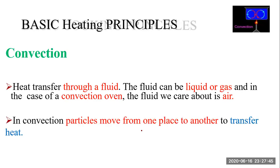The second method is convection. In convection, heat transfers through a fluid, and this fluid can be a liquid or a gas. If you are cooking in an oven, the fluid is air — the air moves within the oven and transfers heat by convection. Unlike conduction where particles vibrate in place, in convection the particles actually move from one place to another to transfer heat.